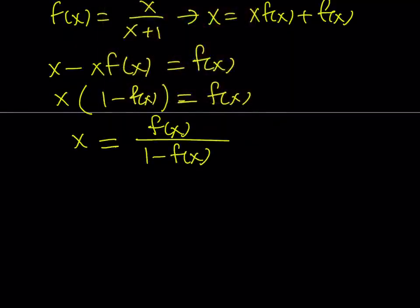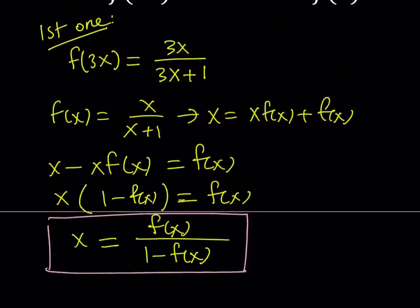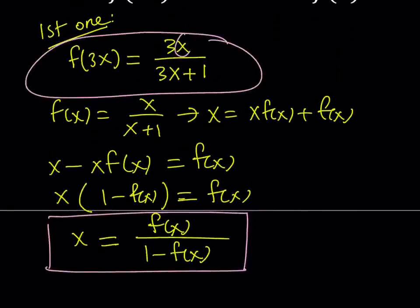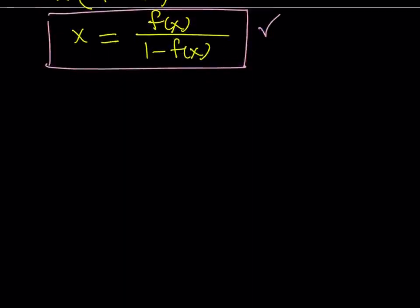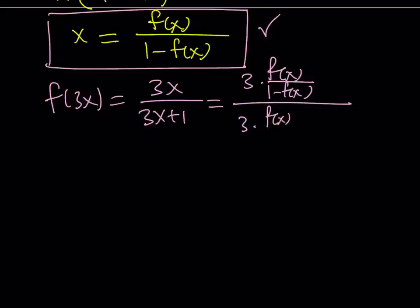So that's x in terms of f of x. Now let's go back to f of 3x and replace the x in f of 3x with this expression. f of 3x can be written as 3x over 3x plus 1. Replacing x gives 3 times f of x divided by 1 minus f of x, and the denominator has 3 times the same thing.